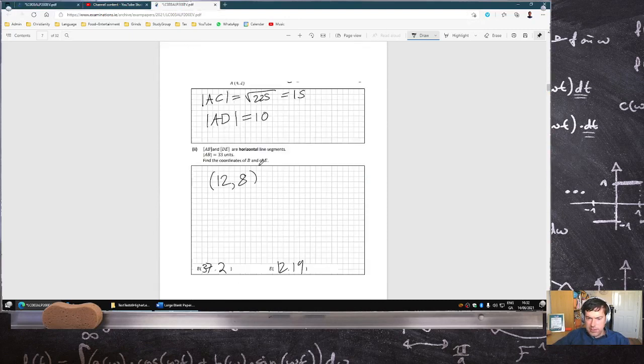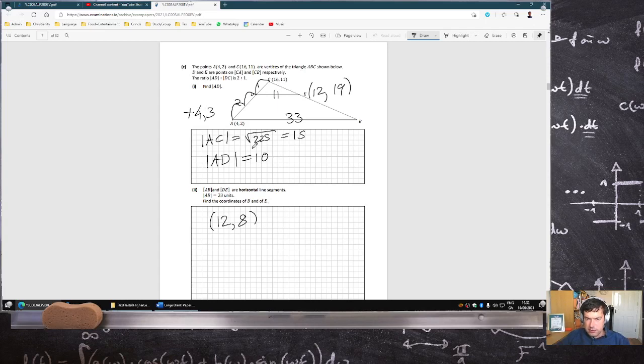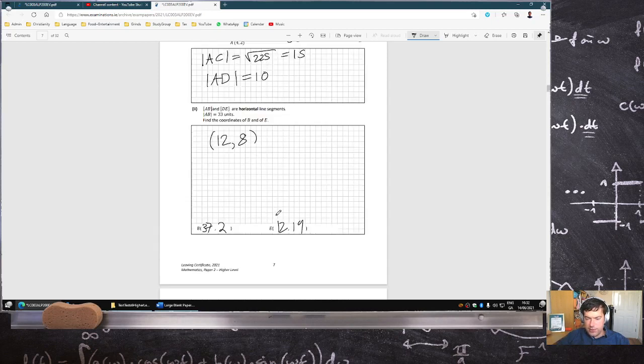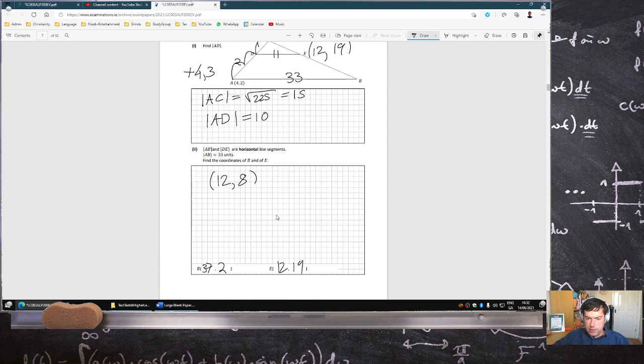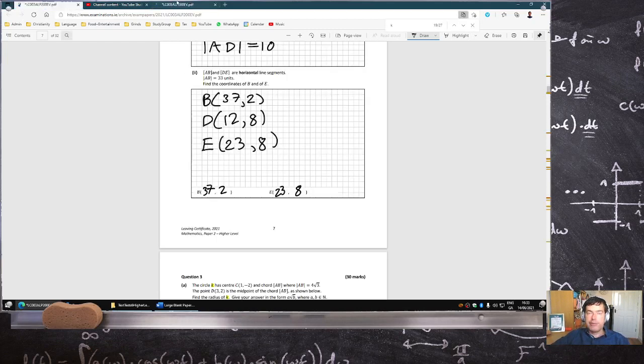12. 8. And then 11 units across. Oh, I added 11 to the y, not the x. If I go 11 units across, then it would be 23, 8. Yeah, okay.